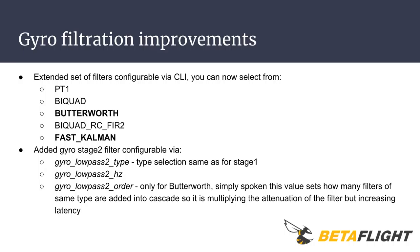The gyro filter types were extended in Betaflight 3.4, and you can now select from PT1, BiQuad, BiQuad RC4.2, and FastCalman filters. This means that for testing FastCalman, you no longer need to recompile Betaflight from source code with that option enabled. There is also a stage 2 filter added, configurable via gyro_lpas2_type, gyro_lpas2_hz, and gyro_lpas2_order. The type selection is the same as for stage 1.